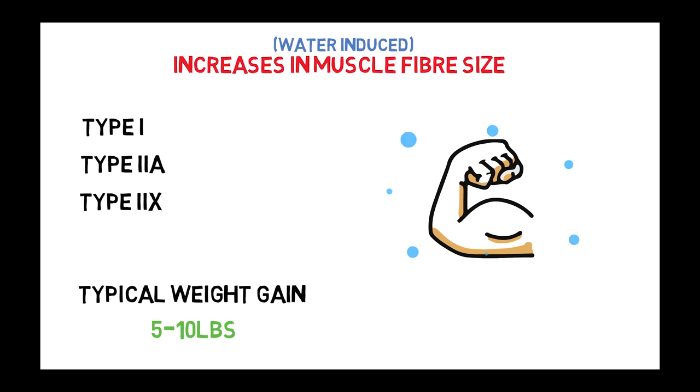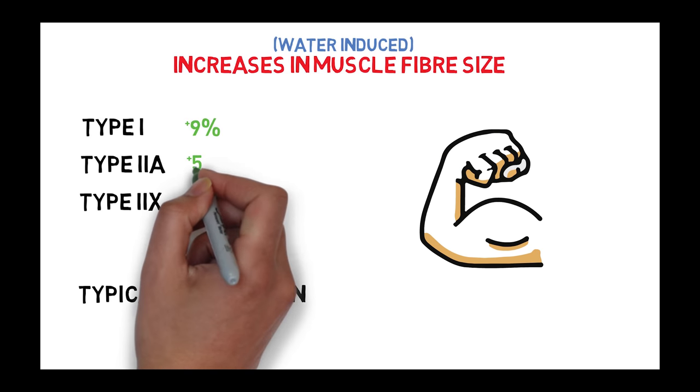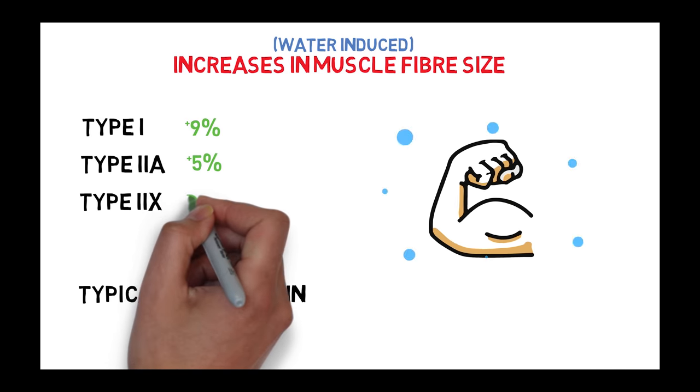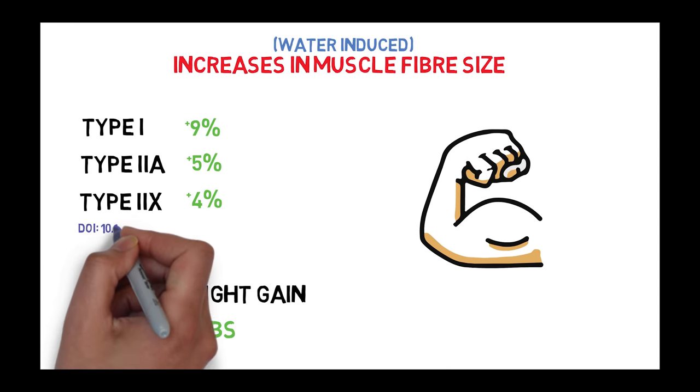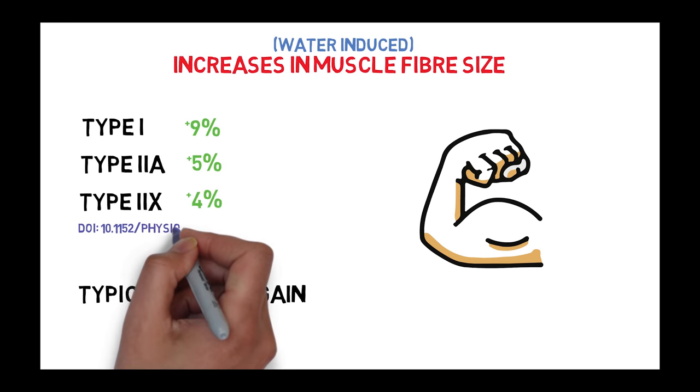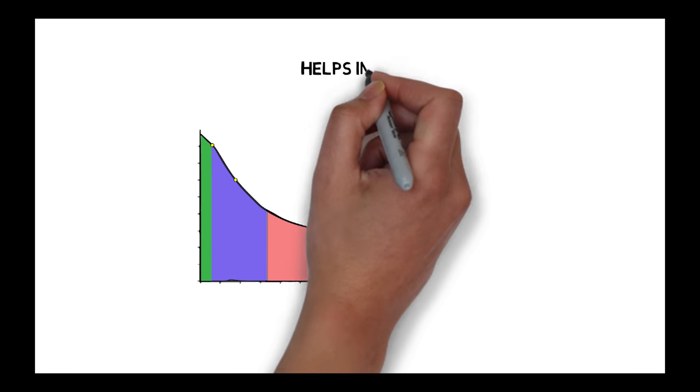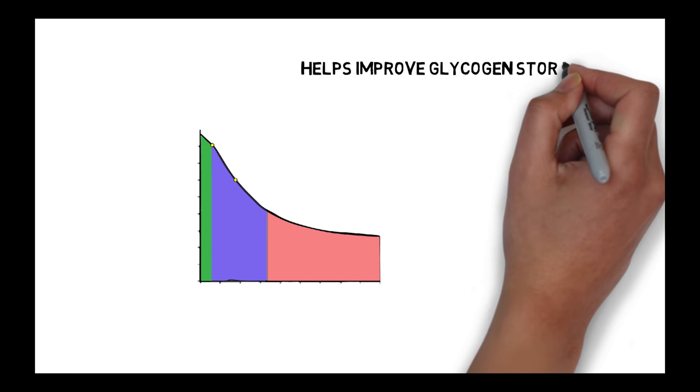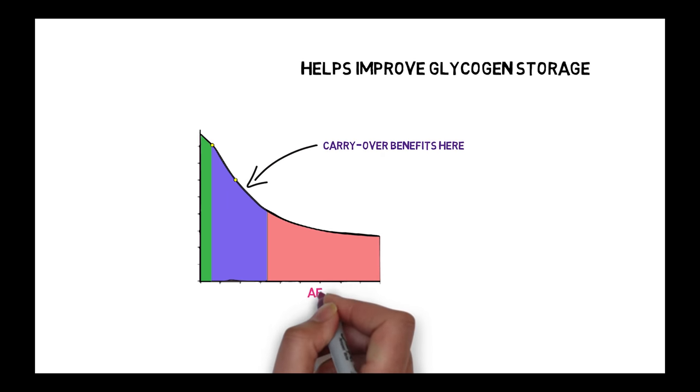So although you aren't adding muscle fibers, increasing water content in muscle cells still increases their diameter. One investigation found type I, 2A, and 2X fibers increased in diameter by 9%, 5%, and 4%. New research is even showing that this cell volumization also helps increase skeletal muscle glycogen, which is utilized during anaerobic activity, which is a system that kicks in after the phosphagen system is done.